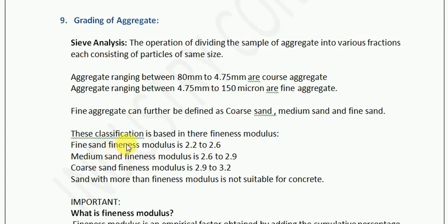Now there is one property which is the fineness modulus, which we will calculate in the further video. Fine sand's fineness modulus ranges between 2.2 to 2.6. If fineness modulus is between 2.6 to 2.9, then it is medium sand. And if the fineness modulus is in the range of 2.9 to 3.2, then it is coarse sand. Sand with more than 3.2 fineness modulus is not suitable for concrete.